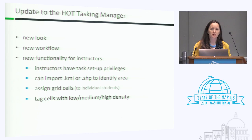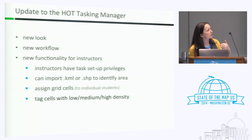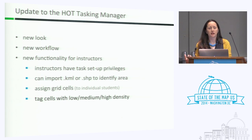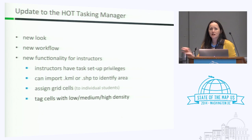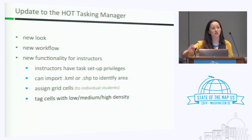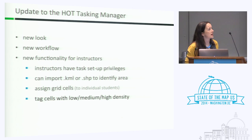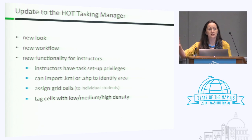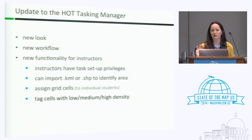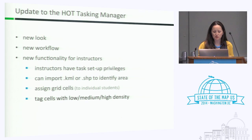Part of the grant money will also contribute toward improving the Tasking Manager — primarily allowing instructors to set up tasks in an educational instance so we're not polluting the humanitarian directive of the original Tasking Manager. Proposed improvements include importing KML from GIS software, assigning cells directly to students rather than self-selection, and tagging cells with low, medium, and high density so cautious users know what they're getting into.